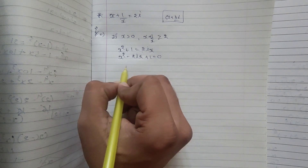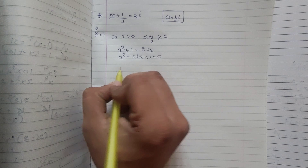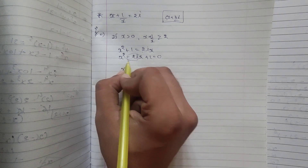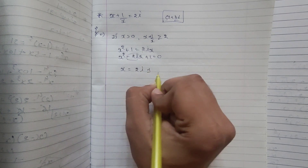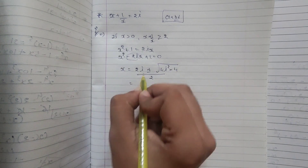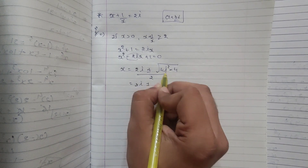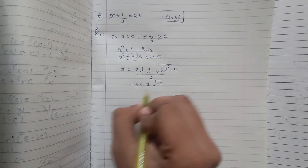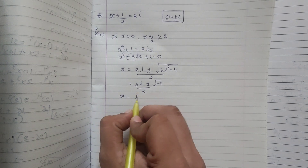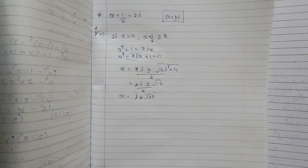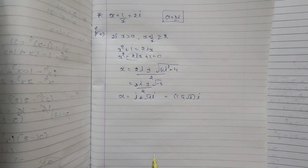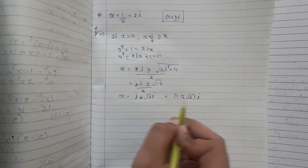This is a second order quadratic equation. We solve it using the formula: minus b plus or minus square root of b squared minus 4ac, divided by 2a. Here b is minus 2i, so it becomes 2i plus or minus the square root of 4i squared minus 4, divided by 2. That simplifies to 2i plus or minus the square root of minus 8, divided by 2, which gives x equal to iota plus or minus root 2 iota. I can also write this as x equal to 1 plus or minus root 2, times iota.